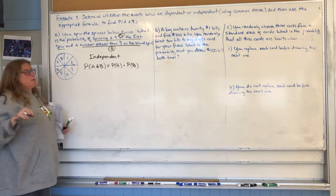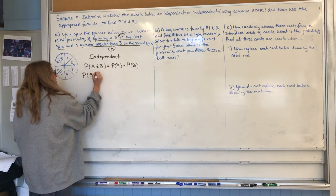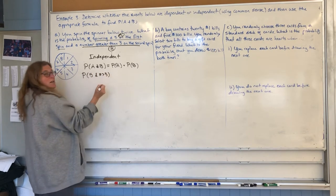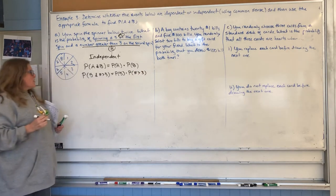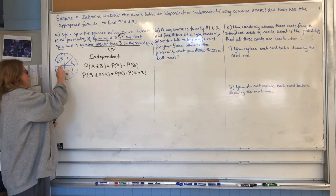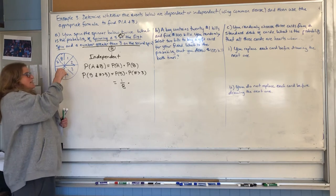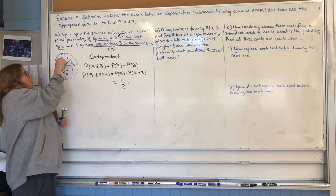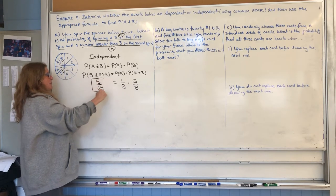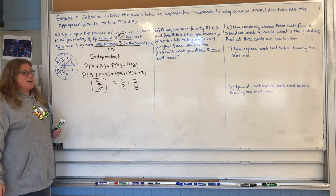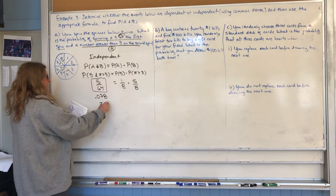So our formula is going to be: probability of A and B equals the probability of A times the probability of B. I chose spinning a five on the first spin as A, and spinning a number greater than three on the second spin as B. The probability of spinning a five is just one out of eight. What about a number greater than three? The numbers greater than three are four, five, six, seven, eight — that's five out of eight. Since we know those are independent, the probability of spinning a five and a number greater than three on two spins is five over 64. As a percent, that's 0.078, which is 7.8%.